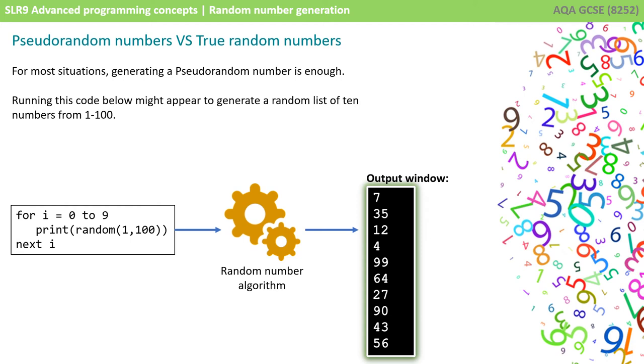So to understand this a little bit better, it's important to understand the difference between pseudorandom numbers versus true random numbers. Now for almost all situations that you'd be using, generating a pseudorandom number is enough. So if we run this simple code below, for i equals 0 to 9, print a random number between 1 and 100. So in other words, chuck me out 10 random numbers between 1 and 100. And if I ran that code, it might indeed appear to do just that, and we can see an output window.